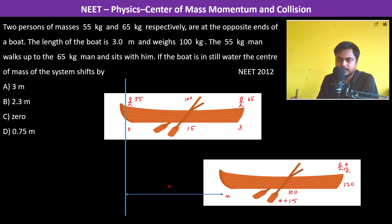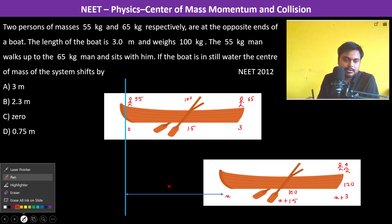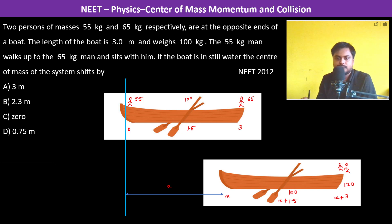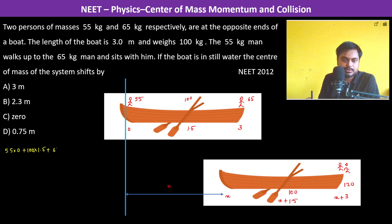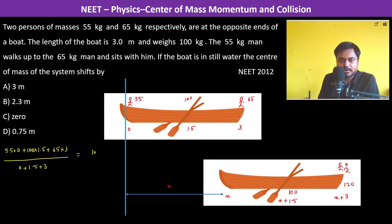Since the center of mass doesn't move, it must be the same before and after. So we set up the equation: the initial center of mass equals 55 times 0, plus 100 times 1.5, plus 65 times 3, all divided by the total mass (55 plus 100 plus 65). This equals 100 times (x plus 1.5) plus 120 times (x plus 3), divided by the same total mass.